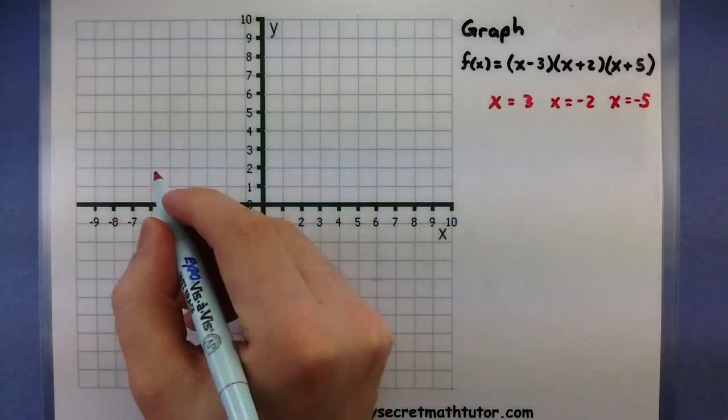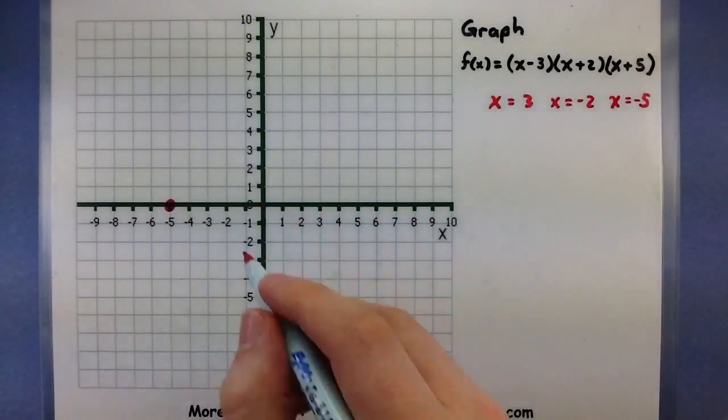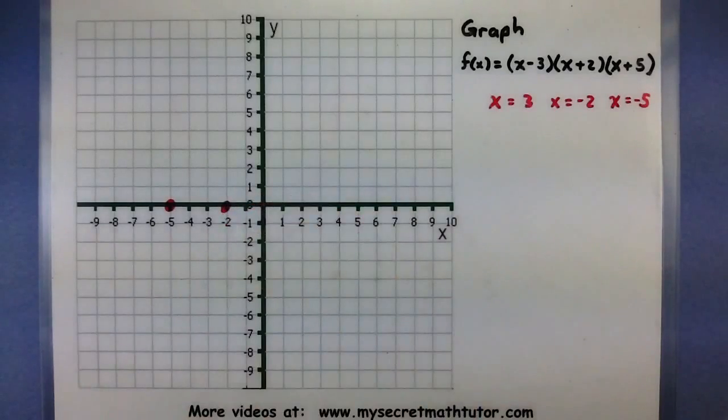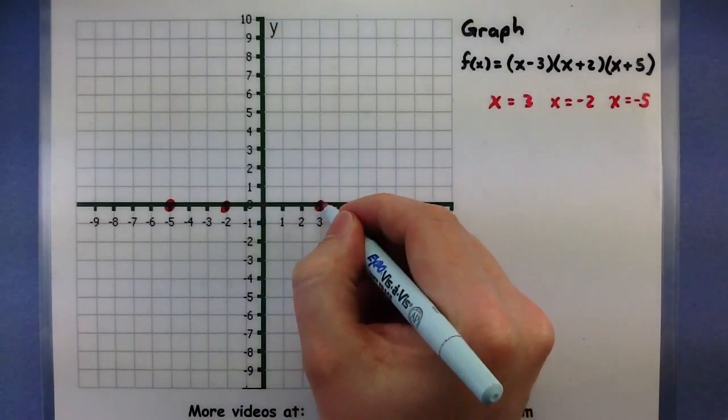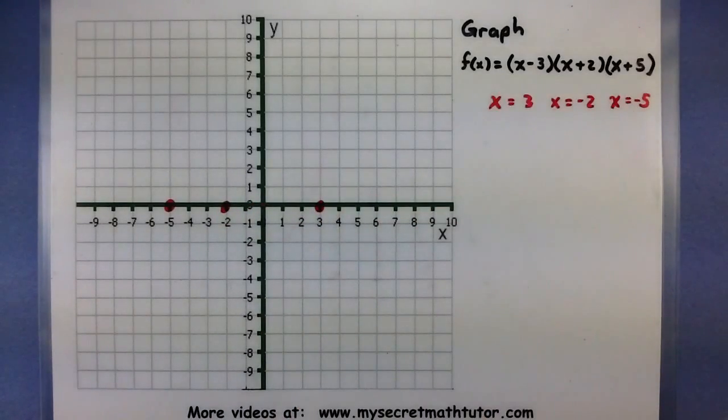So let's go ahead and put these points on here. So negative 5, there's 1, a negative 2, there's another one, and 3.